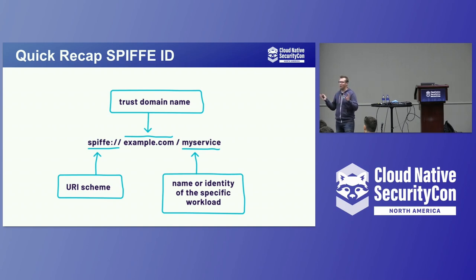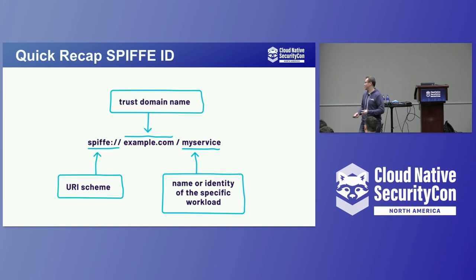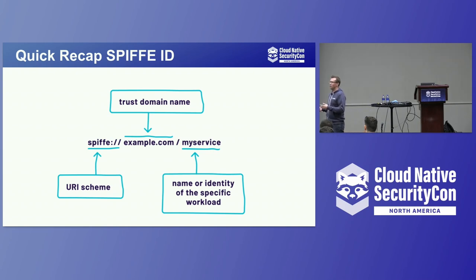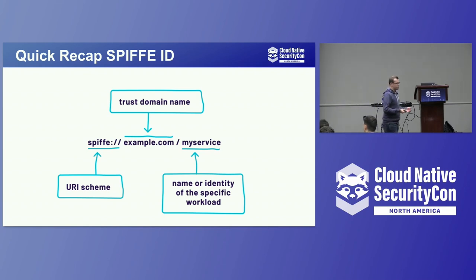What is a SPIFFE ID and how does it look? It's a URI string — it has a URI schema, a trust domain part, and a path. It's pretty similar to a URL, but only the path is allowed. You can put anything into the path, so it doesn't need to be just one word as a name of your microservice. You can build different schemas that incorporate information like which region or data center this workload is running in. It's flexible, but there are certain limitations — because it's going into a JWT or X.509, there will be a limit on how much information you can put in there.